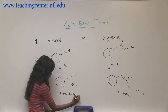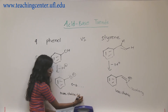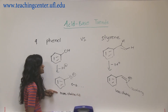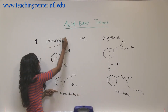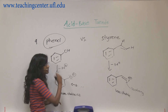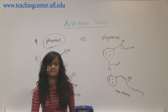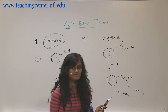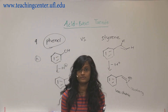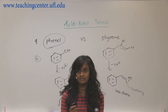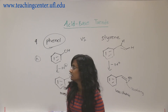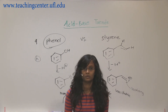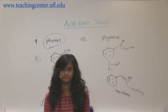This is the more stable conjugate base, which means it's a weaker conjugate base — and a weaker conjugate base means a stronger acid. So phenol is a stronger acid than styrene. If it were a base comparison, styrene would be preferred over phenol.